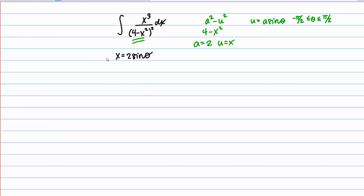That's the substitution we want to try, but just like with any other type of substitution, we also need to compute the derivative. So we need dx, which in this case, taking the derivative, gives us 2 cosine of theta d theta.